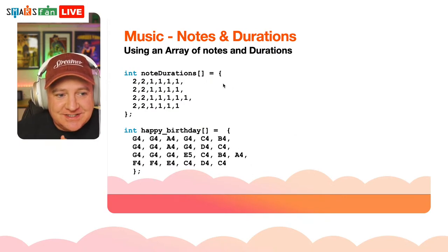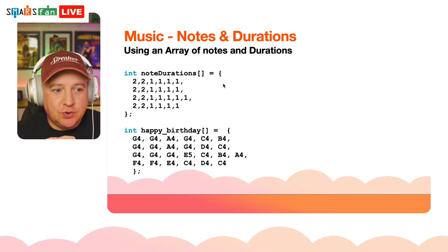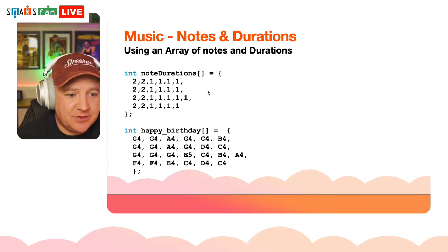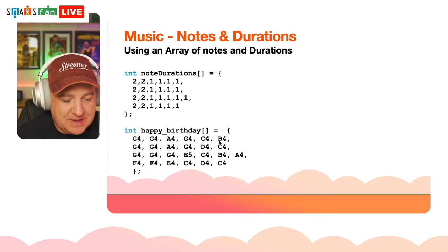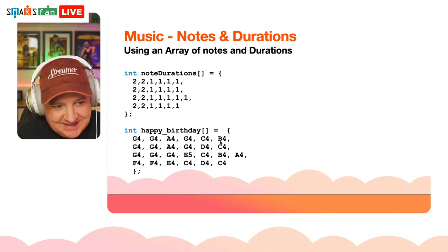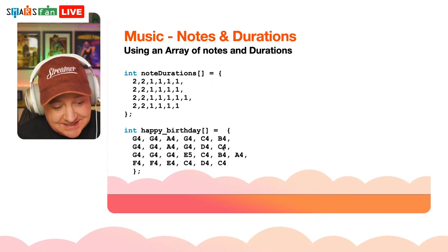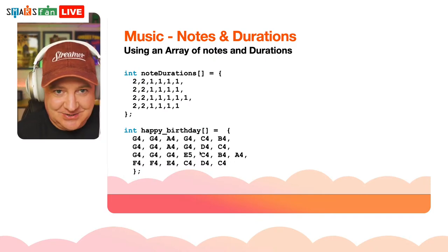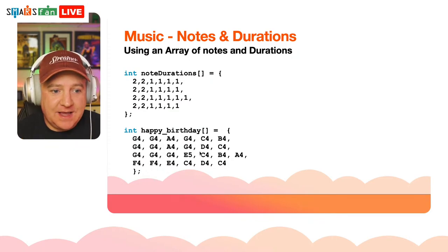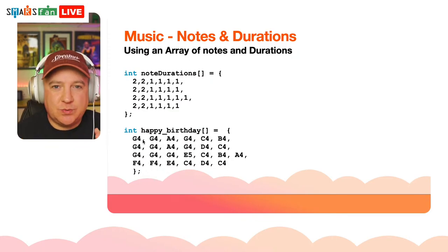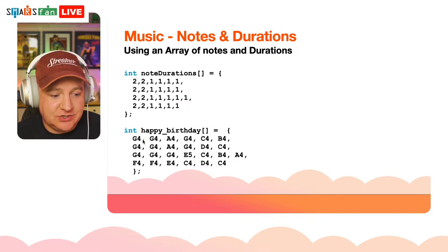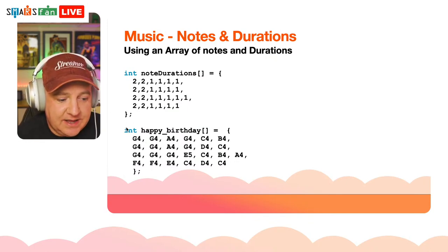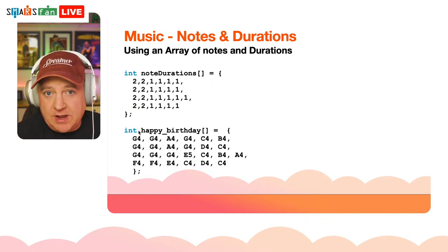For music notes and durations: we store all the notes we want to play in an array. I've got the notes for Happy Birthday here: G4, G4, A4, G4, C4, B4 — they're mostly on the fourth octave. Using note names like G4 means we don't have to type in the exact hertz frequency, which is much more readable when writing music.